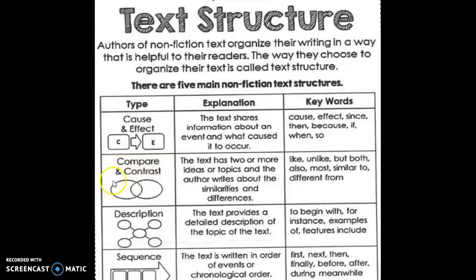Next, we have compare and contrast. There are writing frames available for compare and contrast writing, and graphic organizers such as the Venn diagram can be used for the pre-writing stage. The text has two or more ideas or topics, and the author writes about the similarities and differences. Similarities means to compare and differences means to contrast. The words used are: like, unlike, but, both, also, most similar to, and different from.